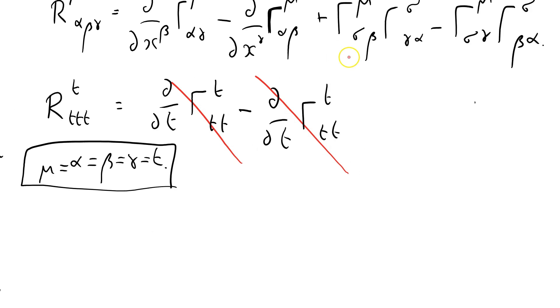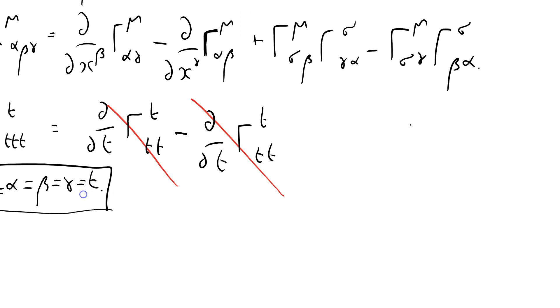These cross terms here are a little bit harder because there's a summation. So what I'm going to do is write it out in a sort of hybrid notation.